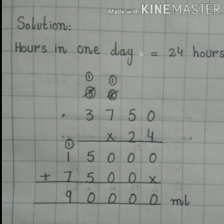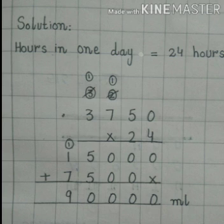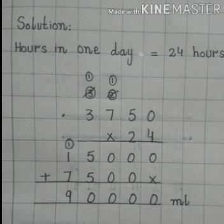Now students, अब हम इन 2 steps को add करेंगे. Start हमेशा right side से करेंगे — units place से. 0 के नीचे कोई number नहीं, so write 0. Next: 0 + 0 = 0. Next: 0 + 0 = 0. Next: 5 + 5 = 10 — write 0 नीचे, 1 carry 10,000s place पर. Next: 1 + 7 + 1 carry = 9 — write 9. So answer is 90,000 milliliter.